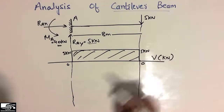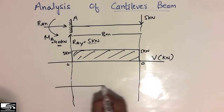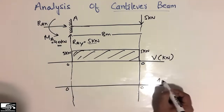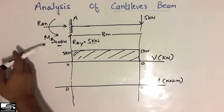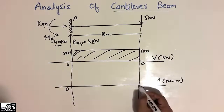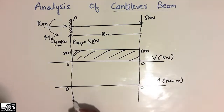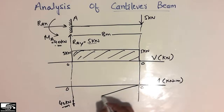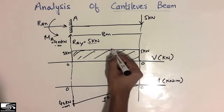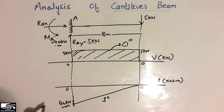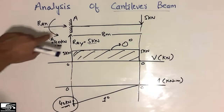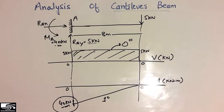To draw the bending moment diagram, we set up the reference line in units of kN·m. At the free end there is no moment, so it starts at zero. At the fixed support, the moment is 40 kN·m. We join these two points with a first-degree line, because the bending moment is always one degree higher than the shear force. This is the bending moment diagram with a maximum of 40 kN·m resisted at the fixed support.